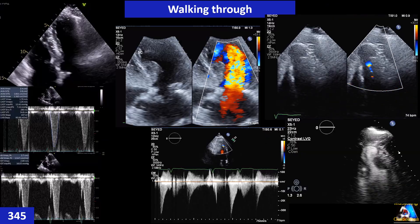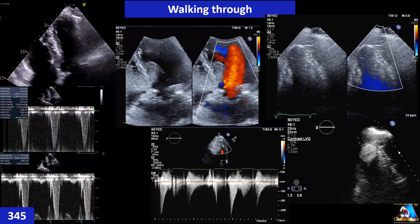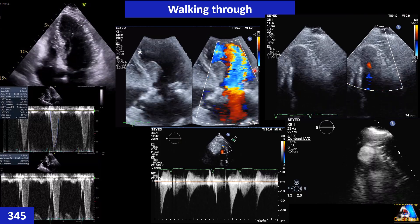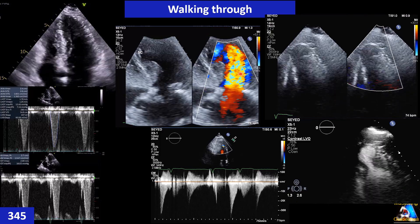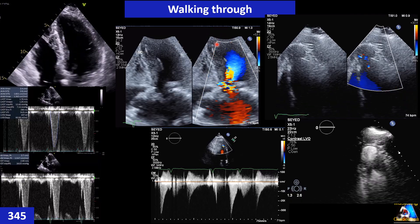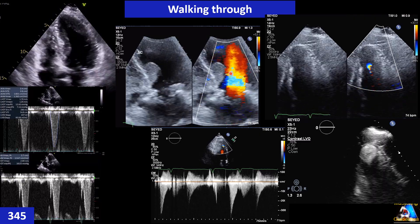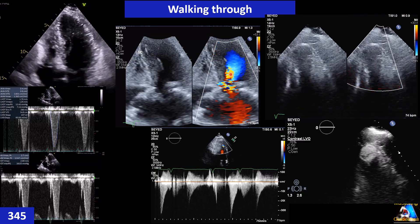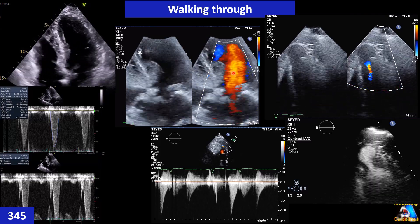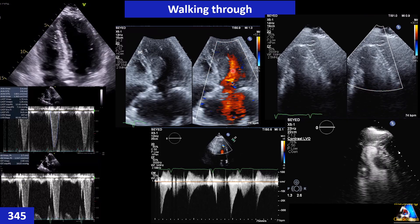The first step for performing the Valsalva maneuver is locating the obstruction. We have two options and we must do both. First, color Doppler: we can see where turbulence is, but it's not very accurate. On this case you can see turbulence here, but we still don't know exactly where the maximum obstruction is, even though on 2D we can see obstruction and turbulence at this level.